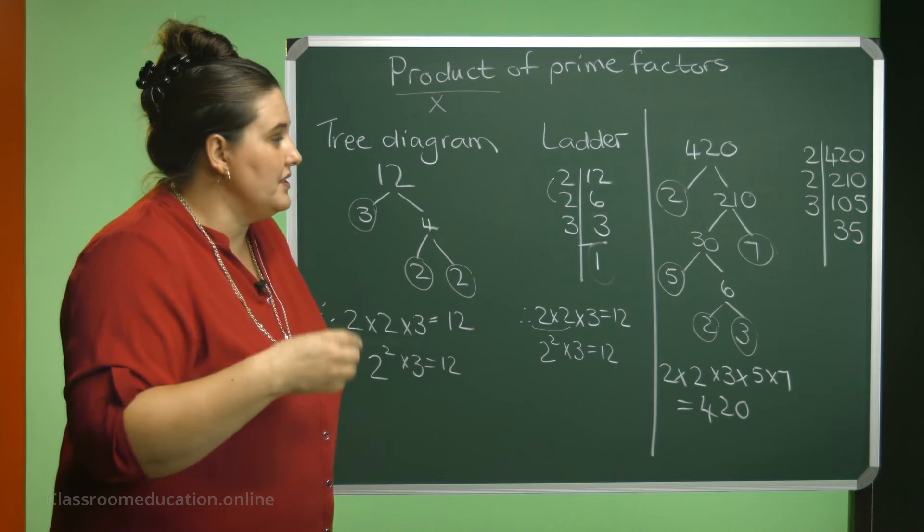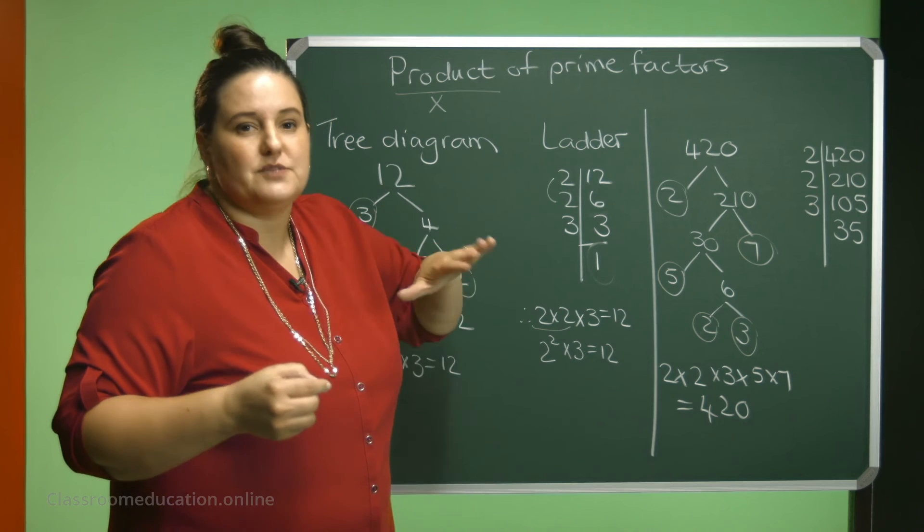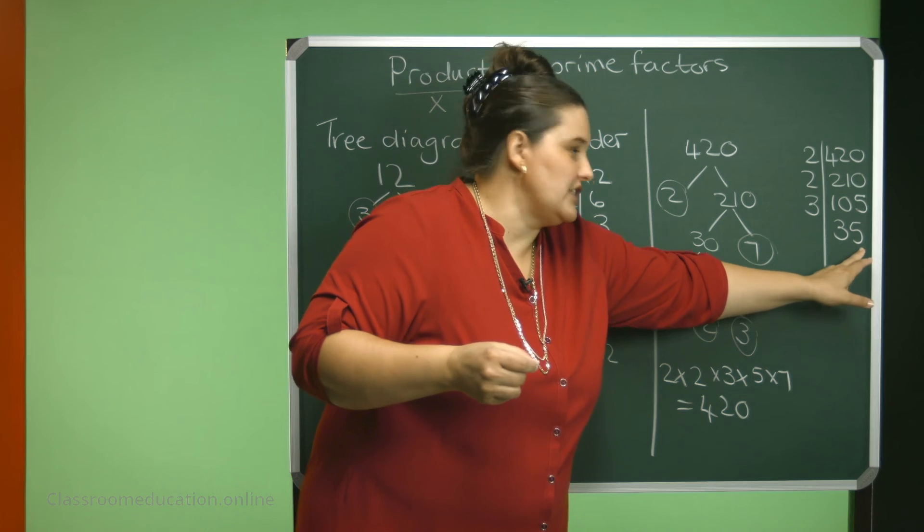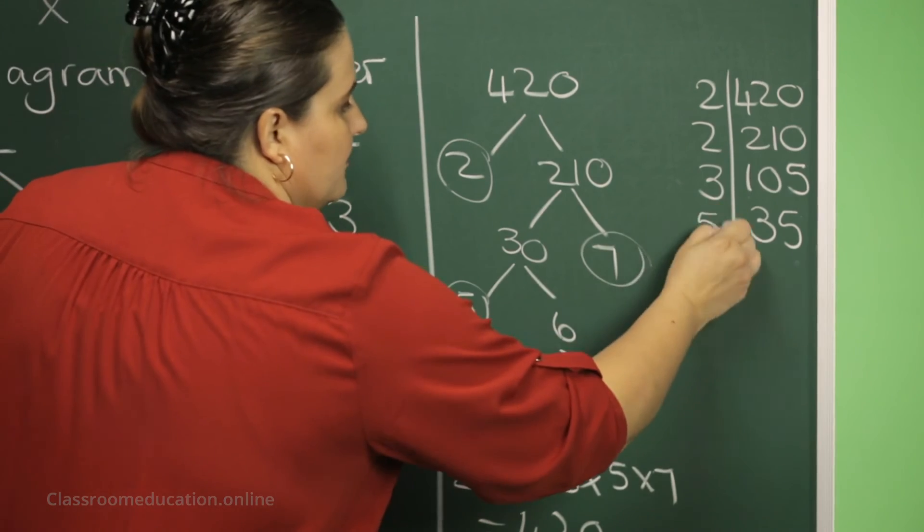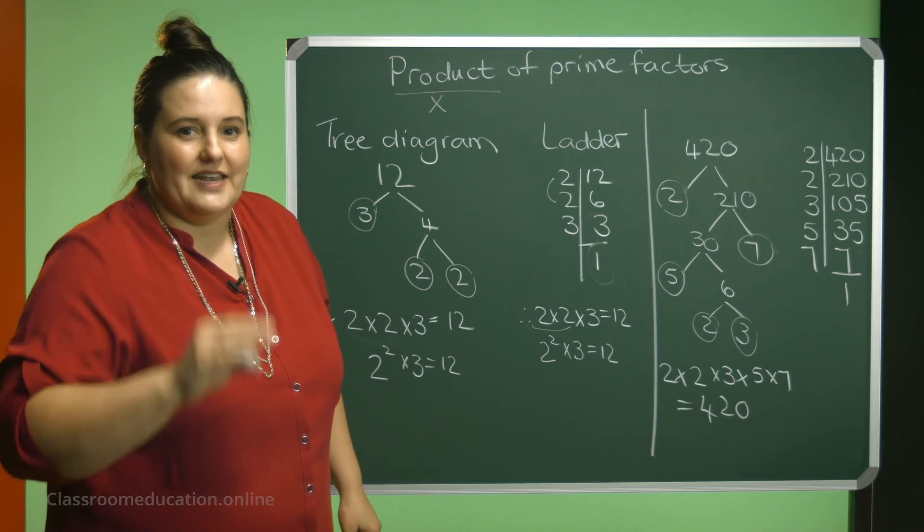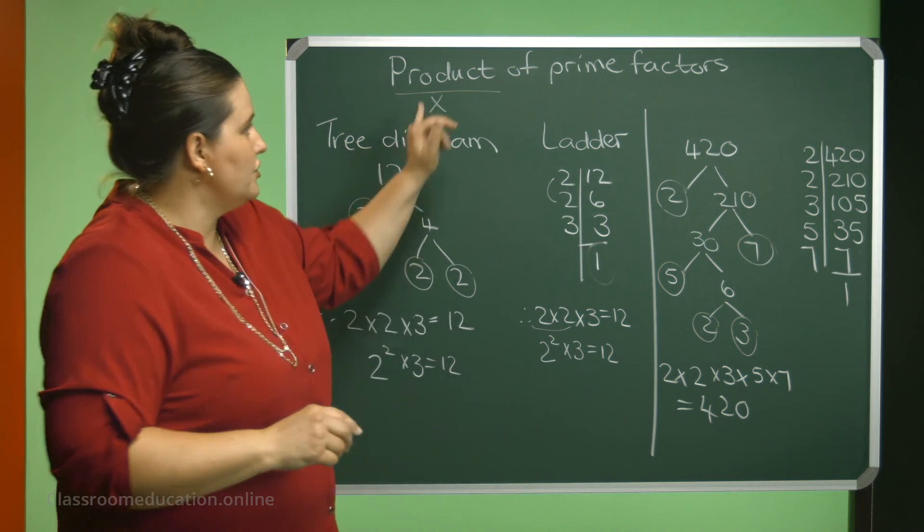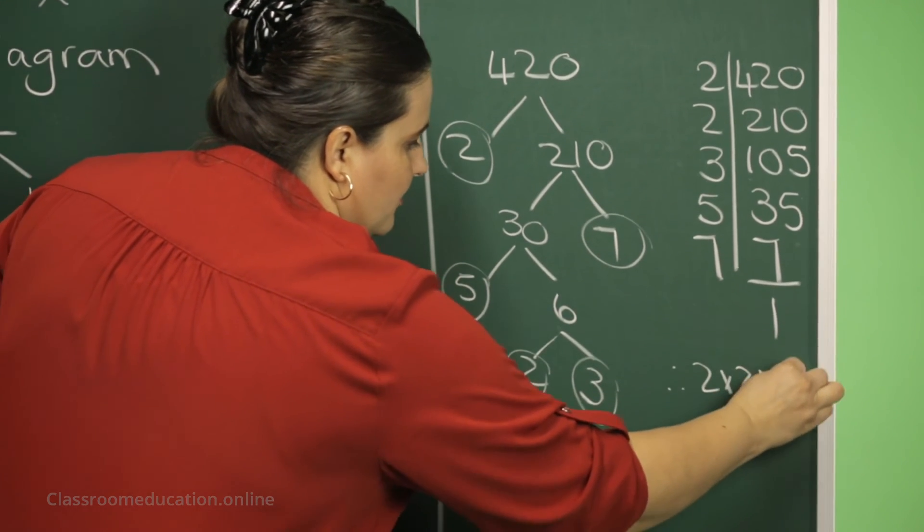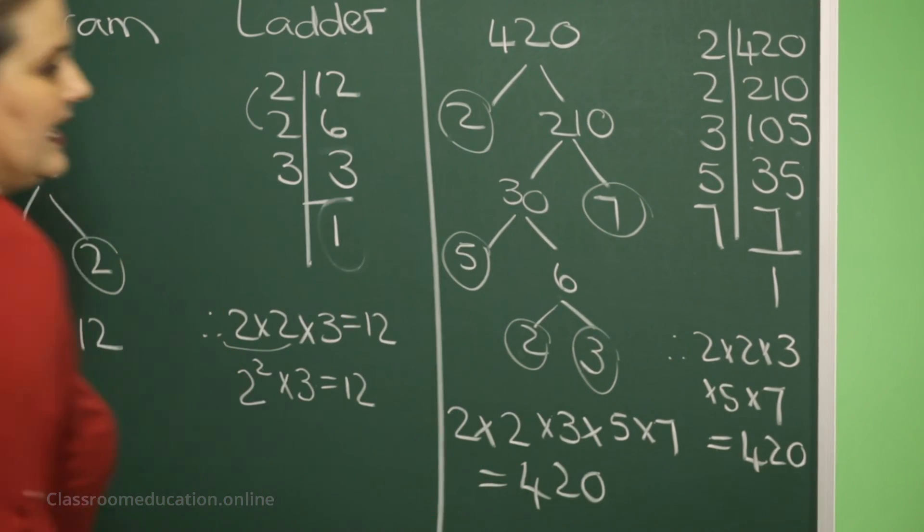Carry on with the 3. Can 3 go into 35? 3 plus 5 is 8. No, it can't. Next prime number, 5. What's the rule of divisibility for a 5? Last digit should be a 5 or 0. So yes, 5 will be able to go into 35. 5 can go into 35 seven times. And 7 can go into itself once. And now we got the prime factors according to our ladder method. We need to write it now as a product of prime factors. Thus, 2 times 2 times 3 times 5 times 7 equals 420.